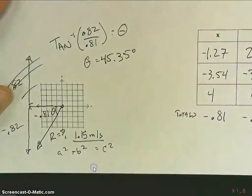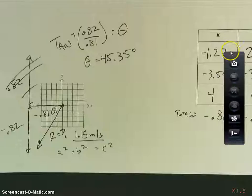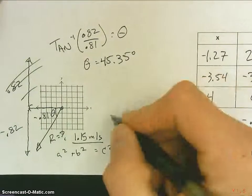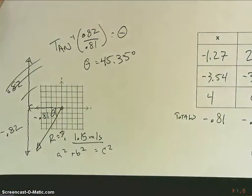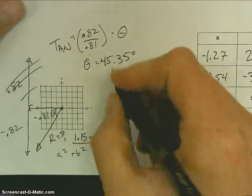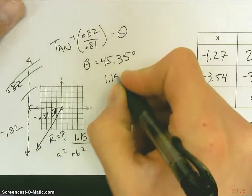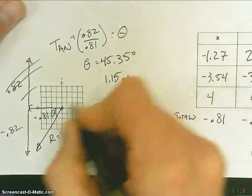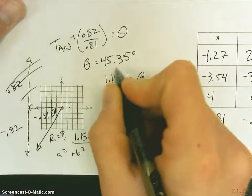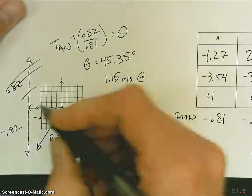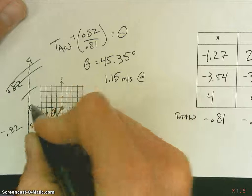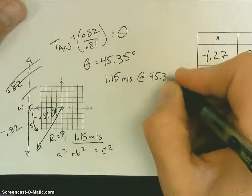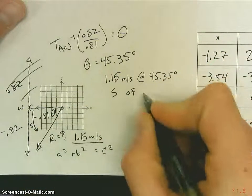Now that we have our angle, we have to actually report our answer using the full thing because, again, this is a vector and vectors need to have both magnitude and direction. So, I would report my resultant as 1.15 meters per second, but I also need a direction. One way to do it would be direction notation by saying at, and I know I have 45 degrees inside my angle, but if I look at my angle, I'm going 45 degrees to the south and I'm starting from my western direction. So, I could say, and I think this is easier, 45.35 degrees south of west.